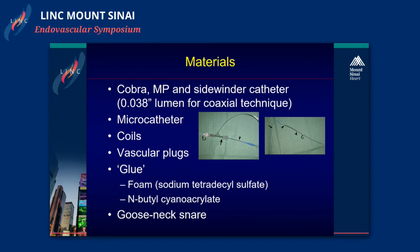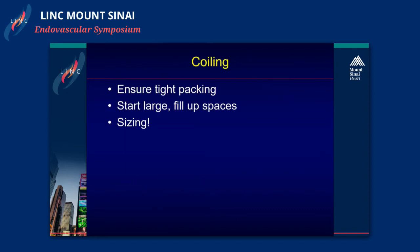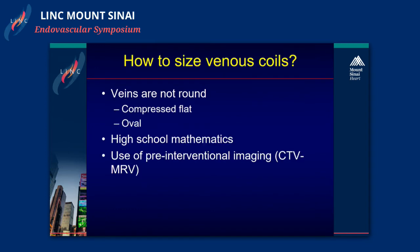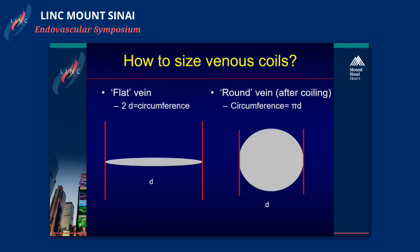When you coil, use tight packing — start large, fill up the spaces — and sizing is very important, and a little bit different from arterial sizing. Because veins are not round; they are compressed flat or oval. The way I do this is using some basic mathematics based on pre-interventional imaging. You can measure the veins adequately because on MR or CT imaging the vein appears flat, so two times the diameter is actually the circumference. But when we put in coils or plugs, the vein will become round, and then you can recover the diameter by taking the circumference and applying the π·d equation.